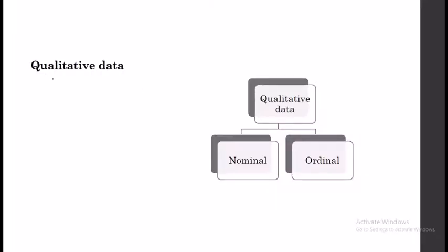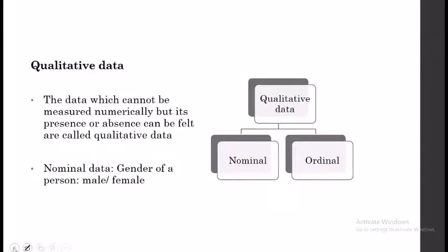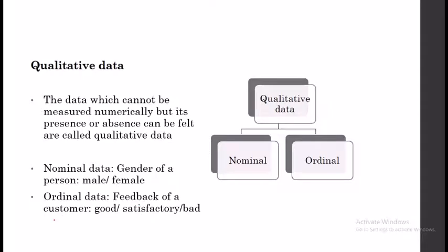Now let's look at qualitative data, which is divided into nominal data and ordinal data. The data which cannot be measured numerically but whose presence or absence can be felt is called qualitative data. Examples of qualitative data include the gender of a person — male or female — and the feedback of a customer — whether it is good, satisfactory, or bad. The gender of a person belongs to the nominal data category, and customer feedback belongs to the ordinal data category.